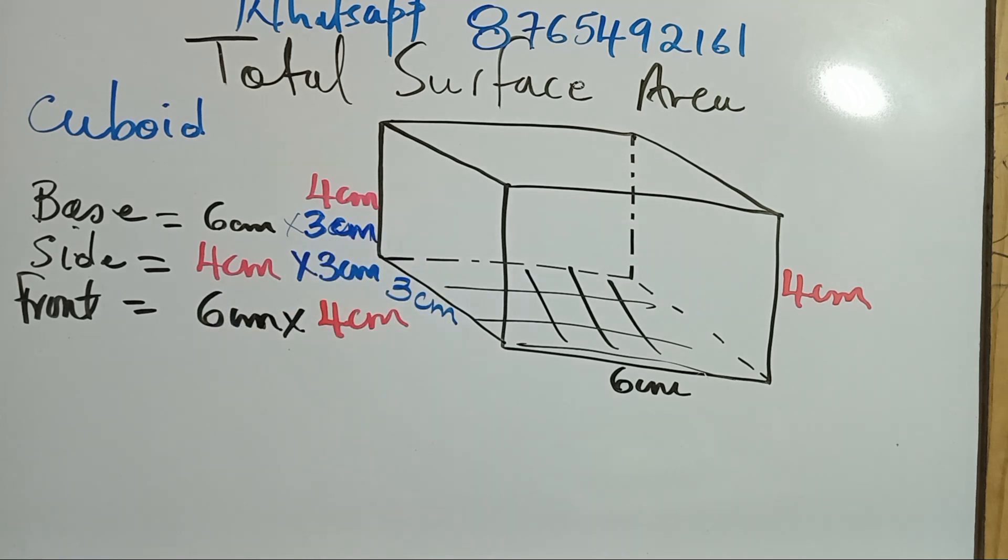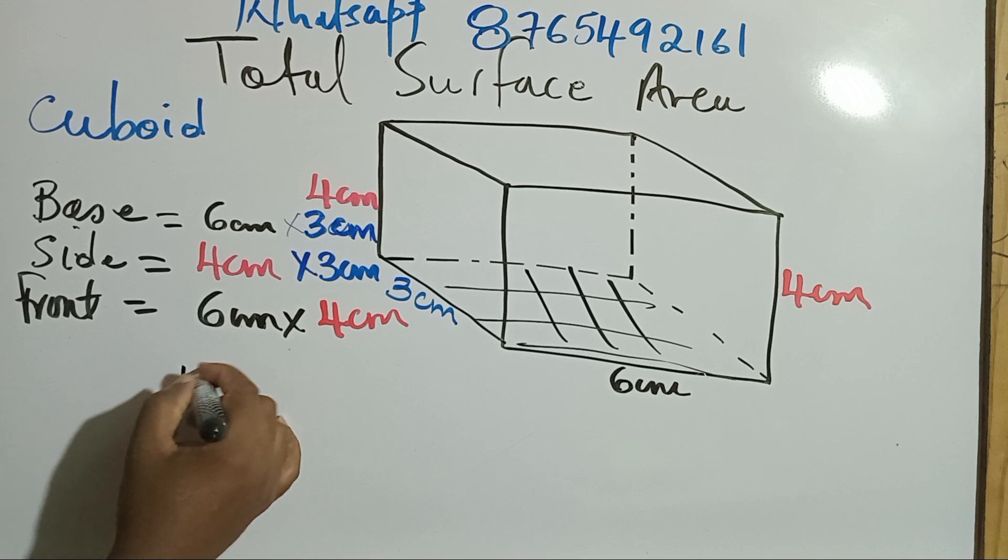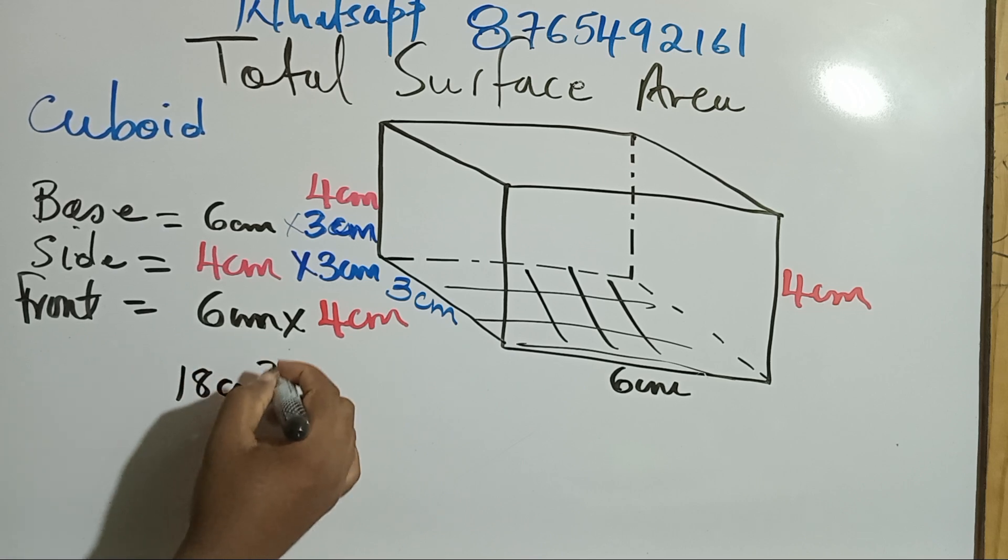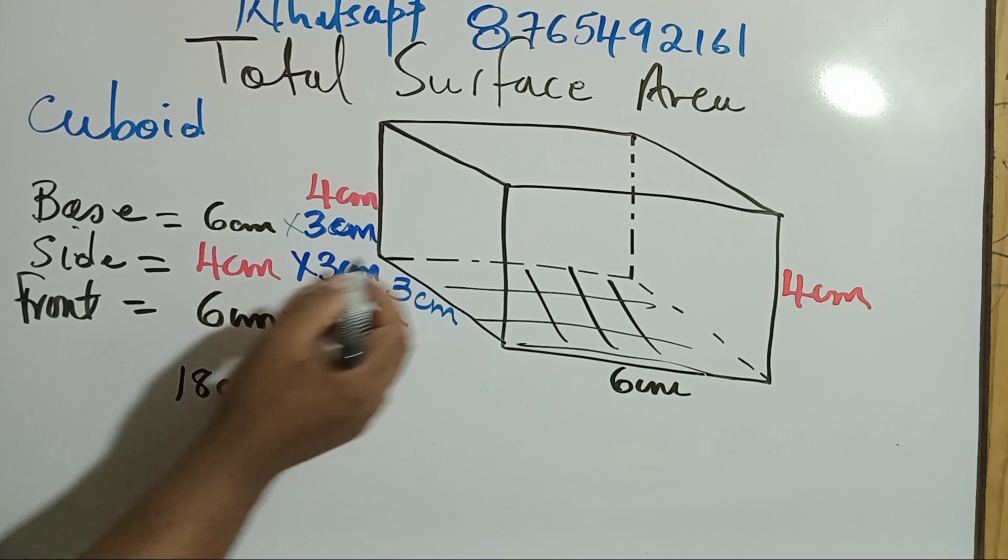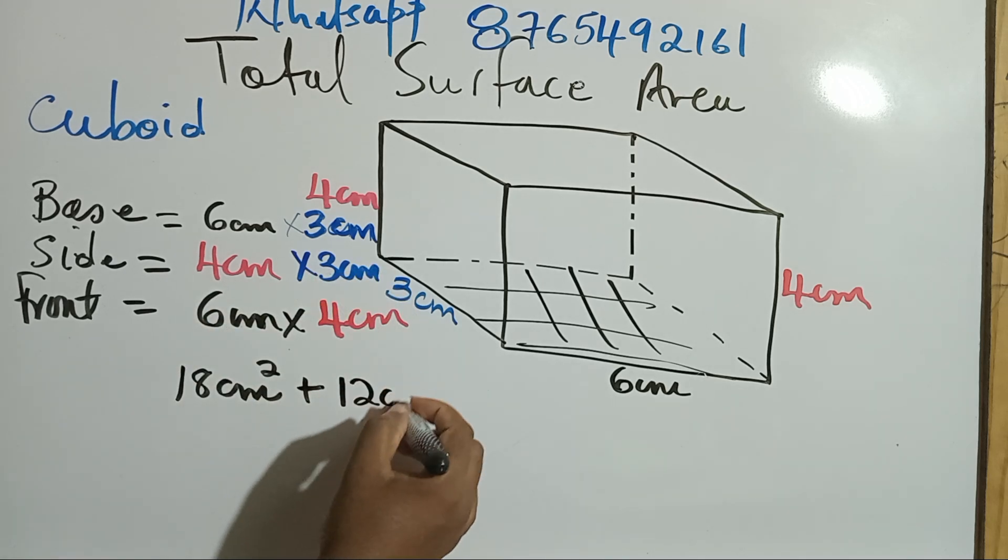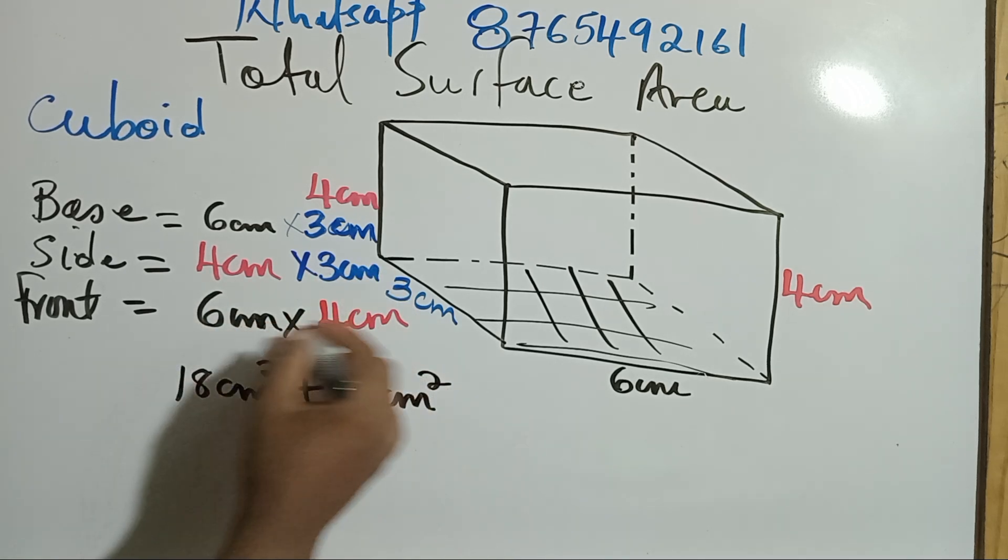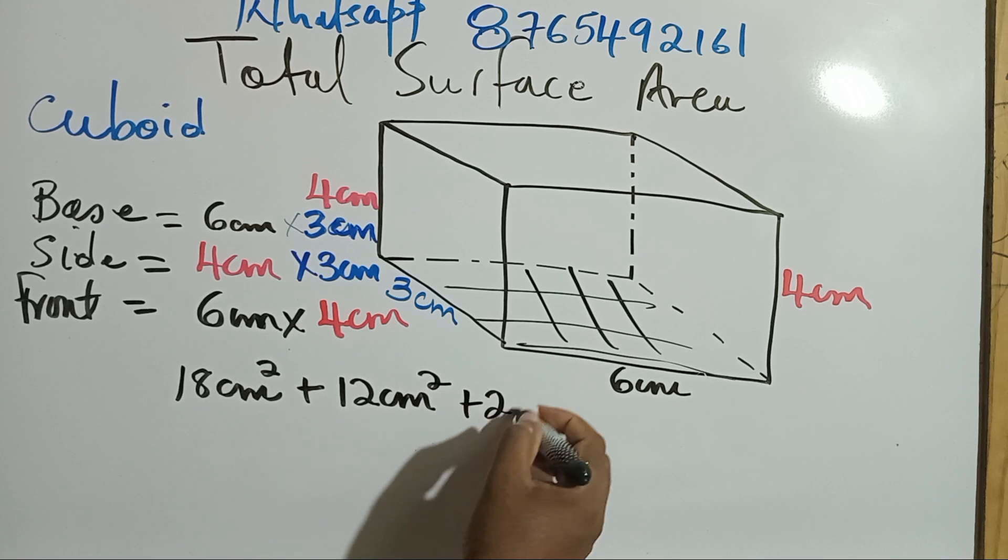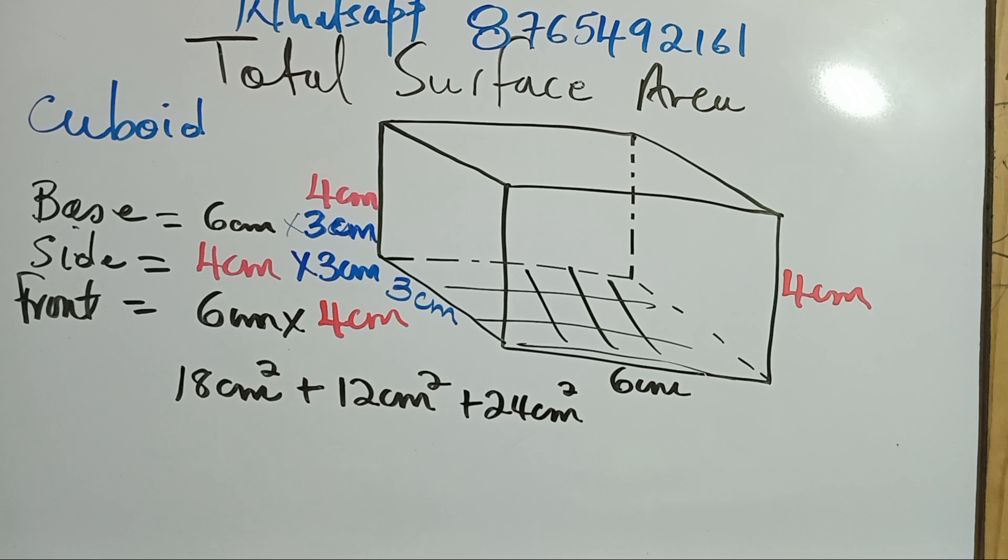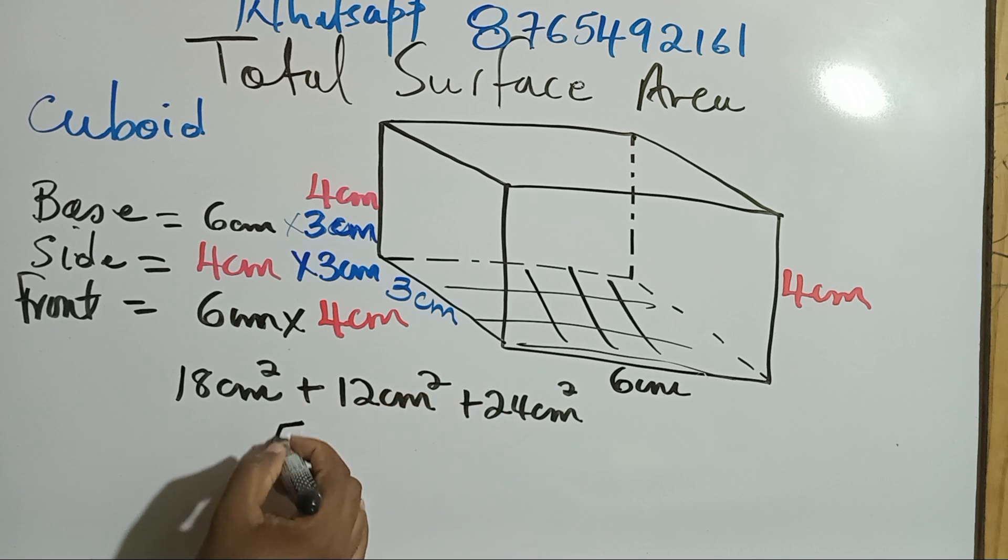All right. Let's simplify this now. So, six times three. That is 18 centimeters squared. It's a rectangle, right? Plus four times three, twelve centimeters squared. Six times four, twenty-four centimeters squared. So let's add 18 plus 12. That's 30. Thirty plus that, fifty-four.